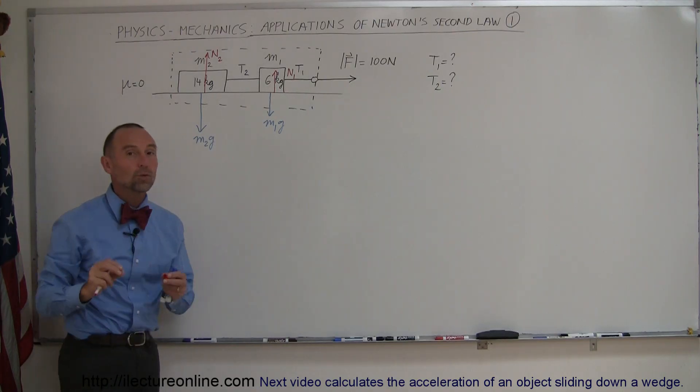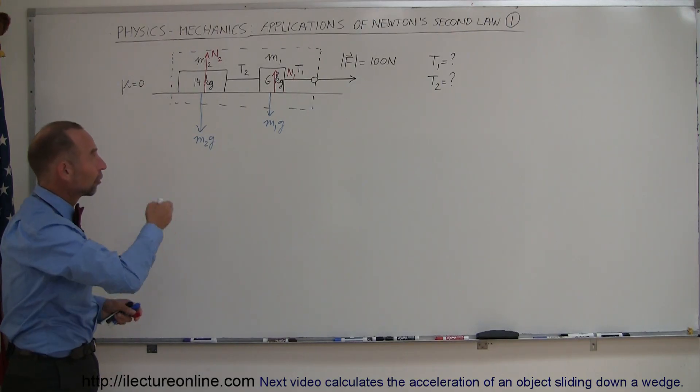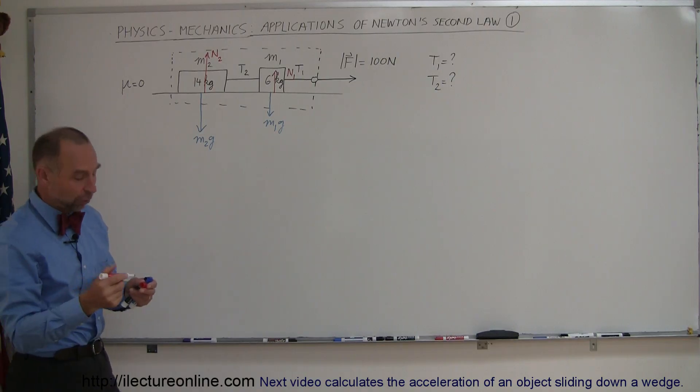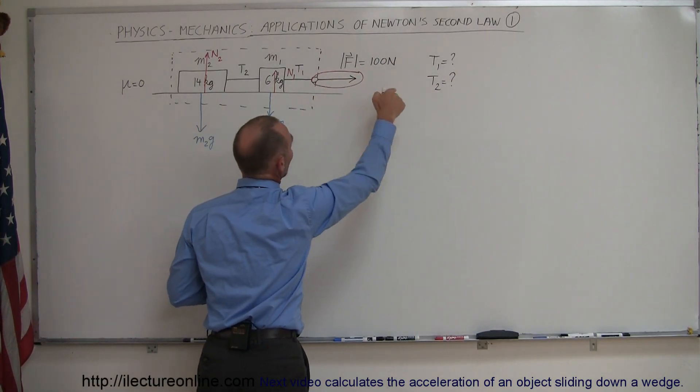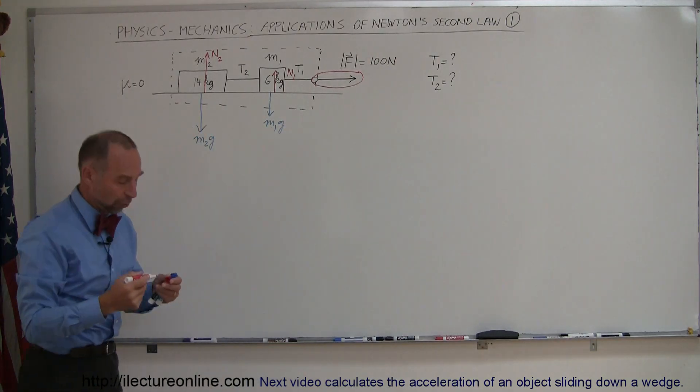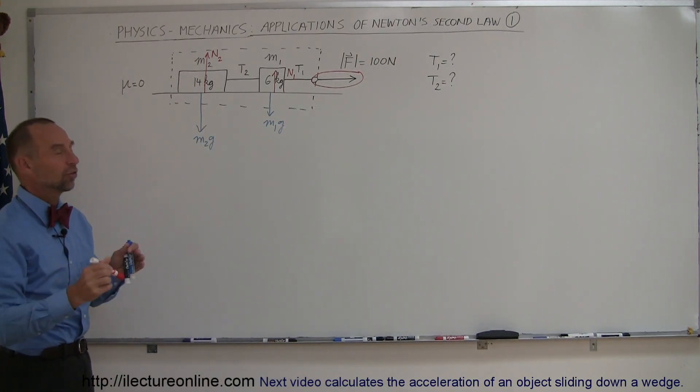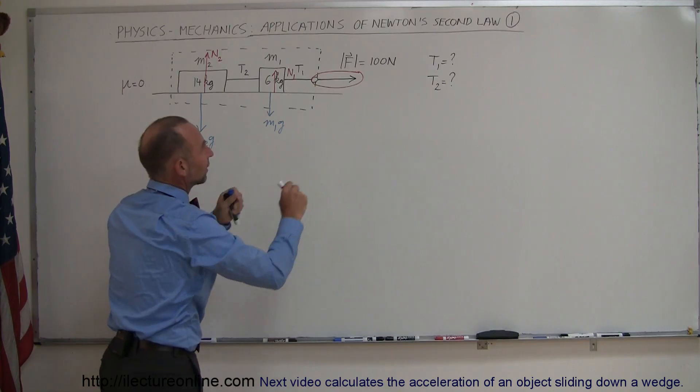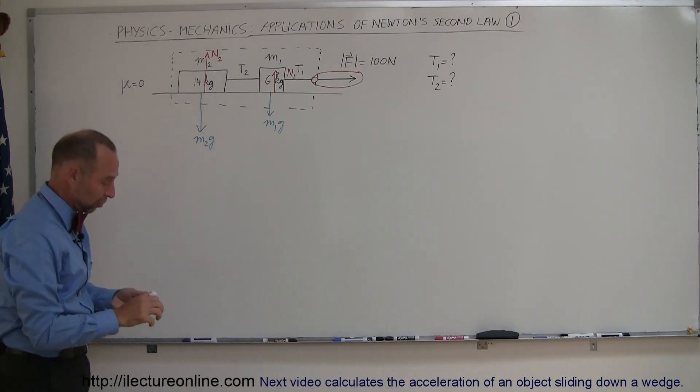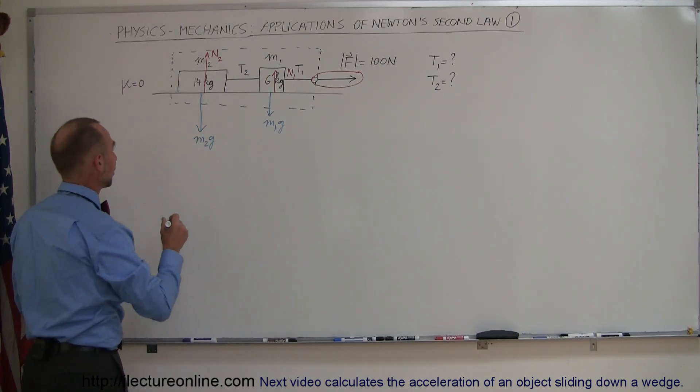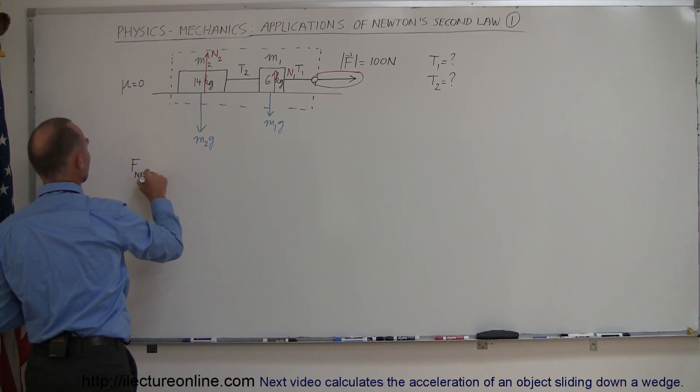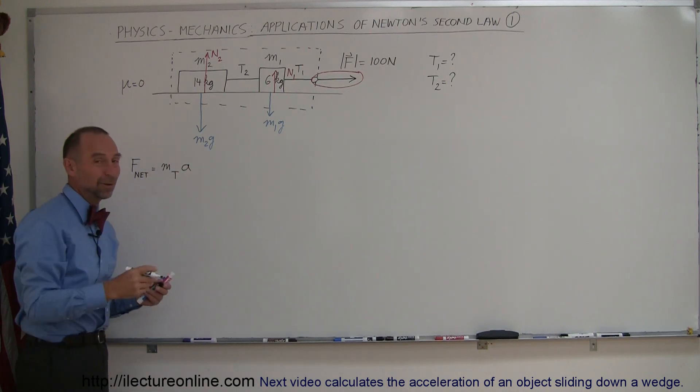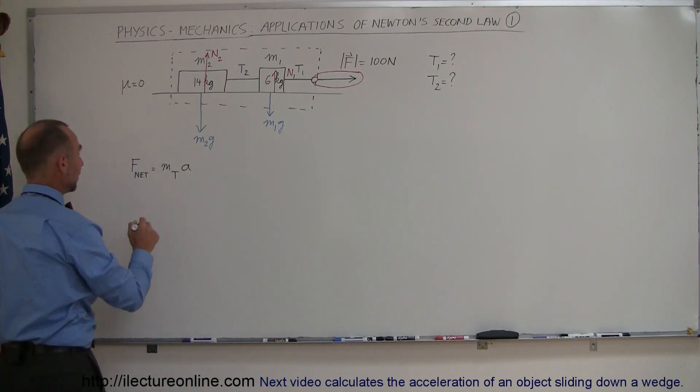There is no net force in the vertical direction. There's only one force left, which is this 100 N force here pulling to the right. That's the only net force on the system, therefore the whole system will accelerate to the right at some acceleration determined by Newton's second law.